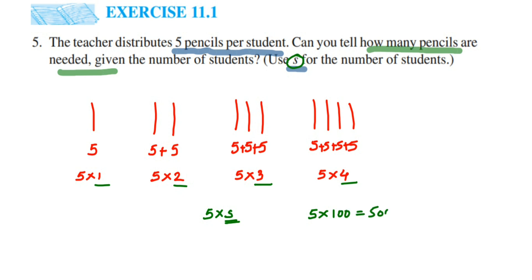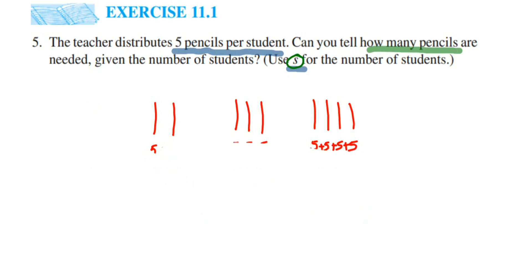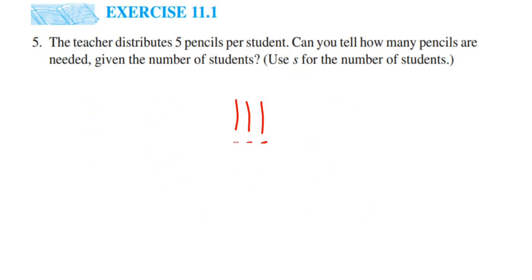Suppose there are 10 students, it will be 5×10. Suppose there are 100 students, it will be 5×100, which is 500 pencils required. It's very simple — in place of the variable we put any value. Suppose 20 students, it's 5×20.